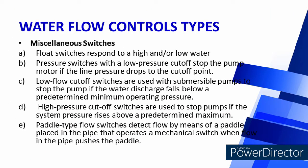Miscellaneous switches: Float switches respond to high and/or low water levels. Pressure switches with a low-pressure cutoff stop the pump motor if the line pressure drops to the cutoff point. Low flow cutoff switches are used with submersible pumps to stop the pump if water discharge falls below a predetermined minimum operating pressure. High pressure cutoff switches stop pumps if system pressure rises above a predetermined maximum. Paddle-type flow switches detect flow by means of a paddle placed in the pipe that operates a mechanical switch when flow pushes the paddle.